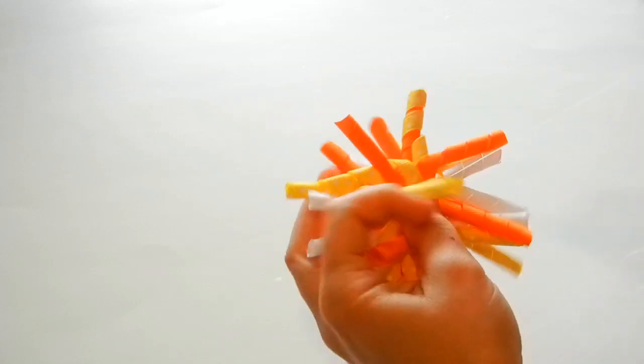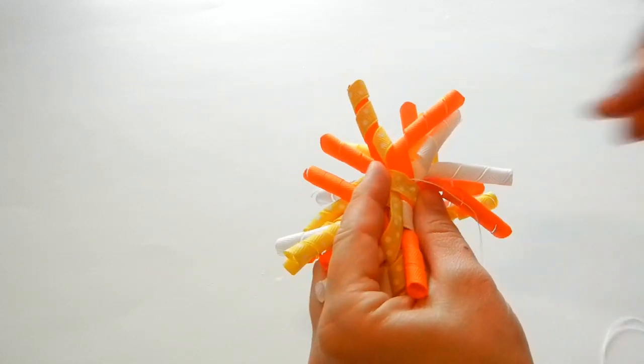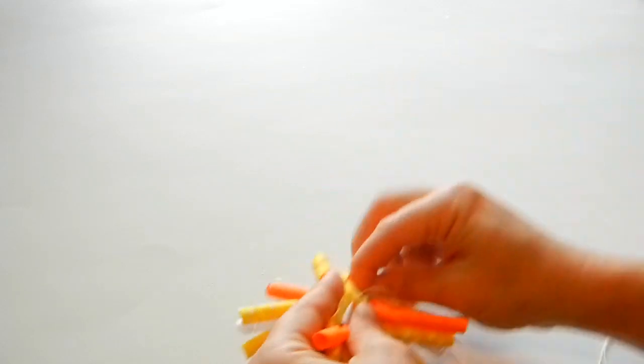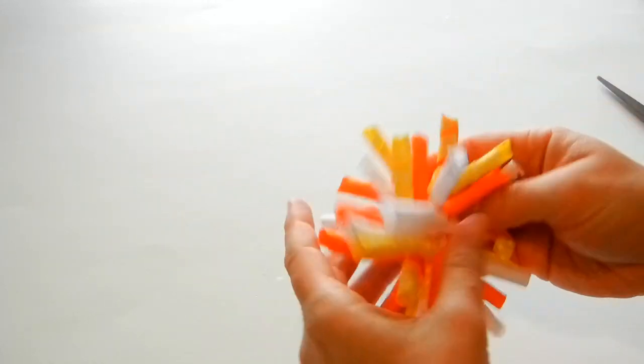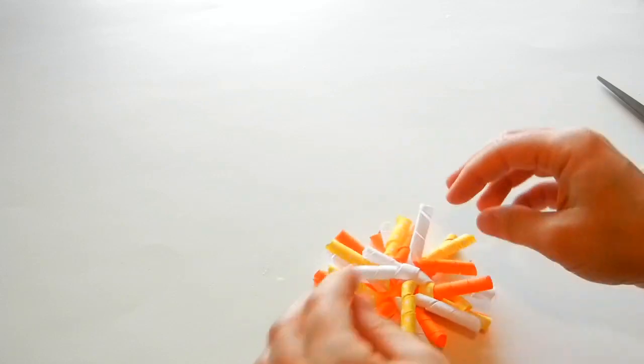When you've gone through and now it's secure, we're just going to take a couple stitches in the back. Our corker bow is done, and now we're going to add our center.